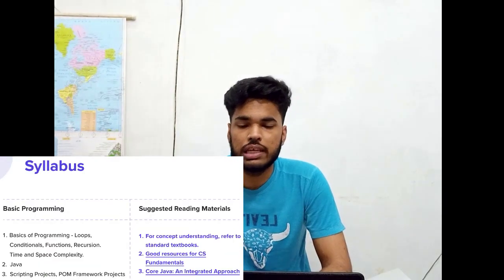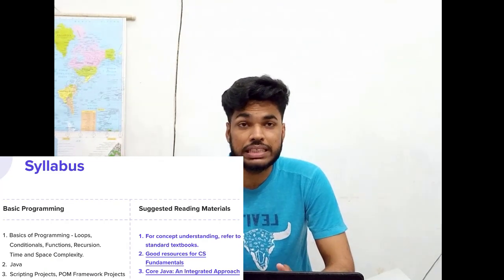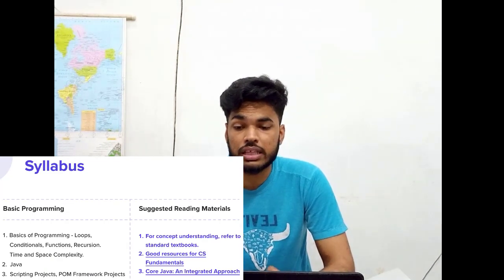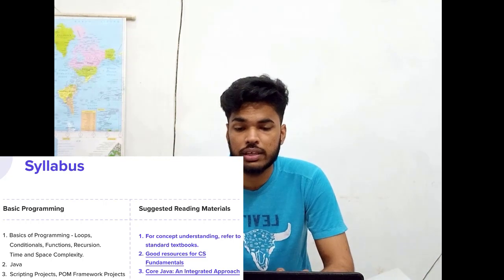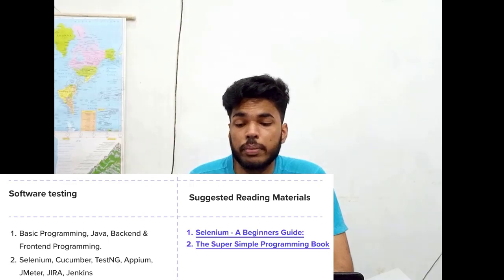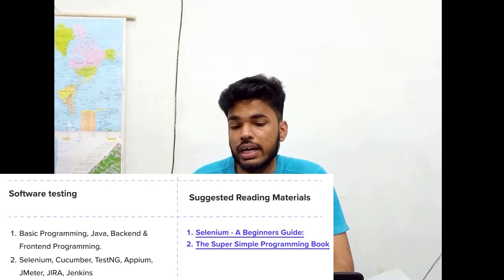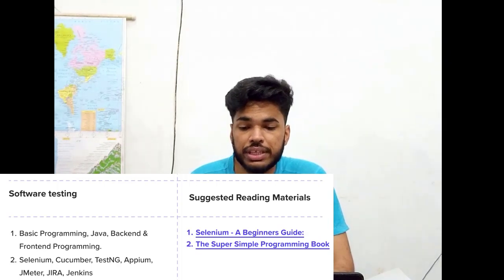Now moving on to the syllabus part — you may take a screenshot of the screen. From the basics of programming section, they would be asking about loops, recursion, Java, scripting projects, and POM framework projects. From the software testing section, they would be asking about basic programming, Java, back-end and front-end programming, Selenium, Cucumber, TestNG, Appium, JMeter, Jira, and Jenkins.